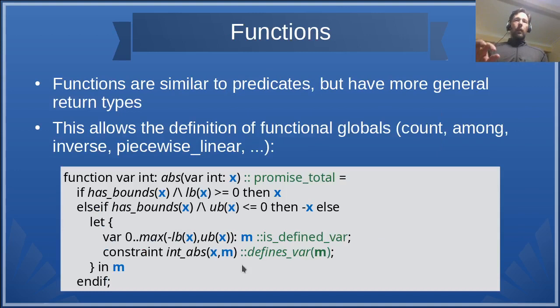A generalization of predicates are functions. Their return type is more general. It can be variables, arrays, constants. This allows the definition of functional globals, like piecewise linear, and they can be defined directly in the library, in the language. In this example, we have the abs function. After some preprocessing, trying to eliminate trivial cases, if we need really to impose some constraint to compute this function, then this is the let construct. We create an auxiliary variable with this domain and then we impose the global constraint, and this variable is returned as the result.